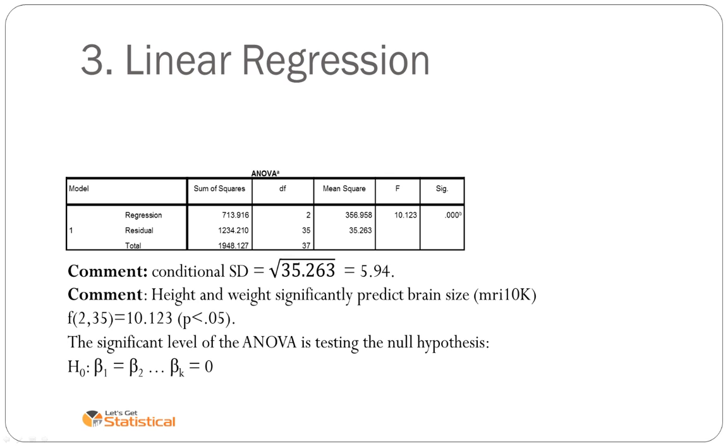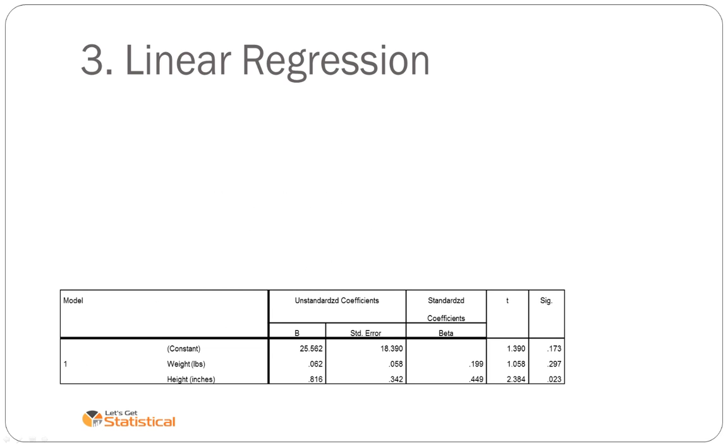The null hypothesis testing is that at least one of the betas is equal to zero. That is either height and or weight. We don't know which one it might be. We have to look below to find out. We look below the significance levels and we find that in fact height is significantly related to the DV, but not weight, but we'll deal with that in a minute.